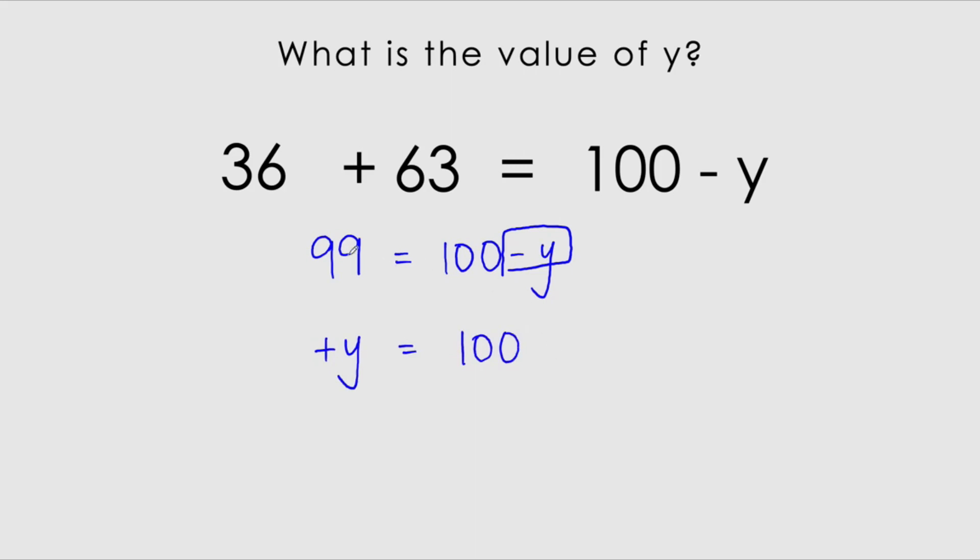Now, I'm going to keep the 100 here. Now, this is a positive 99. So you don't have to write the positive sign here, but it's a positive 99. And if I bring it over the equal sign, what will it become? It will actually become minus 99. So from positive here, it becomes minus 99. So y is equals to 100 minus 99. That gives us 1. So y is actually equals to 1.